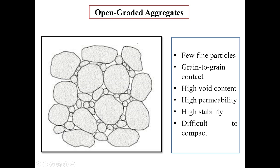Next is open-graded aggregates. Here it can be seen from this picture that there will be few fine particles between the coarse particles. There will be grain-to-grain contact here also. There will be high void content and therefore high permeability, but the stability is also high here. These are also difficult to compact.